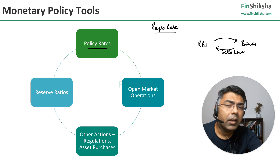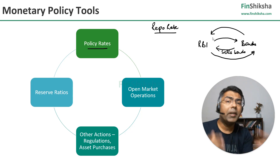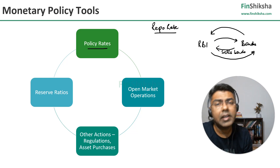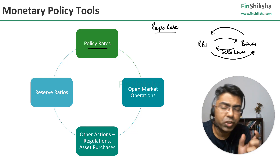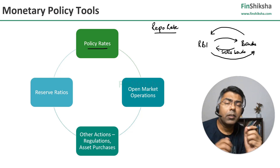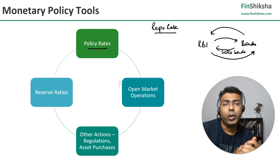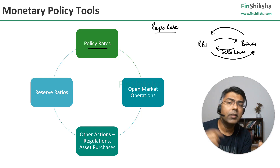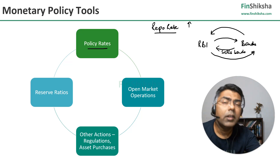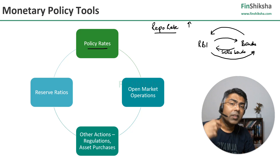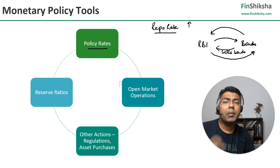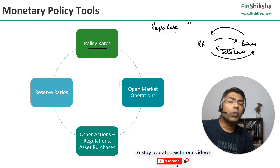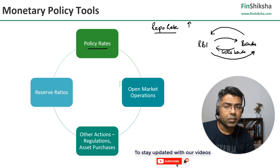The bank sells securities to the RBI with the promise that they are going to repurchase these bonds at a later point, thereby returning the money to RBI. The amount paid back is the initial amount borrowed plus the interest rate as defined by the repo rate — that's why the term repurchase option comes into the picture. When the RBI raises the repo rate, the cost of borrowing for the bank goes up. The signal RBI is giving is: I am increasing the rate I charge you, so you also need to increase the rate you charge your customers.